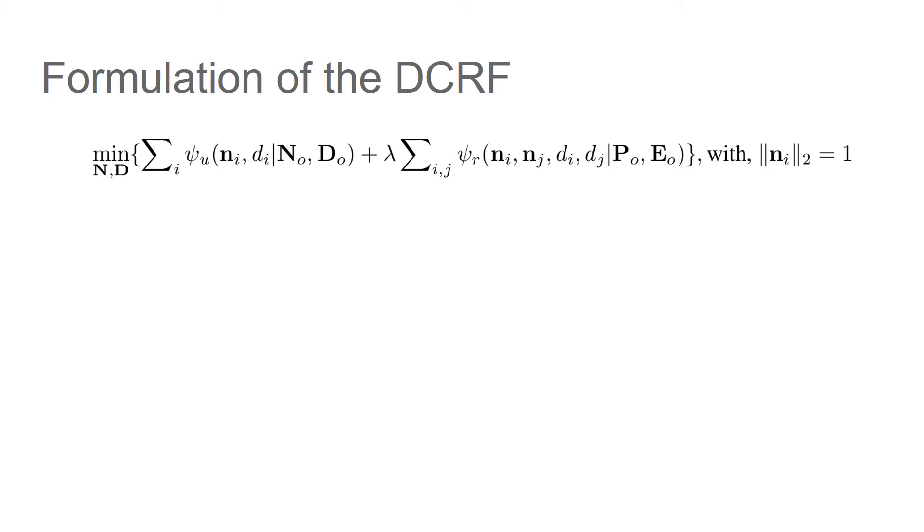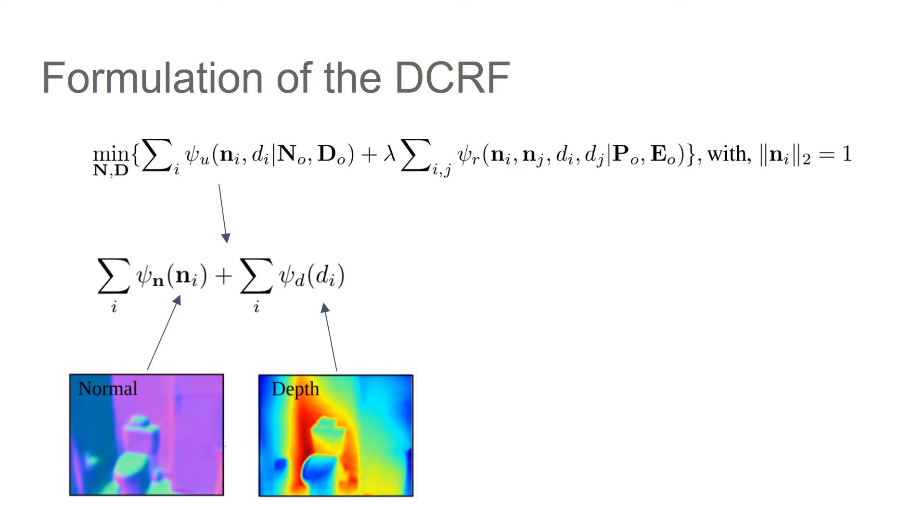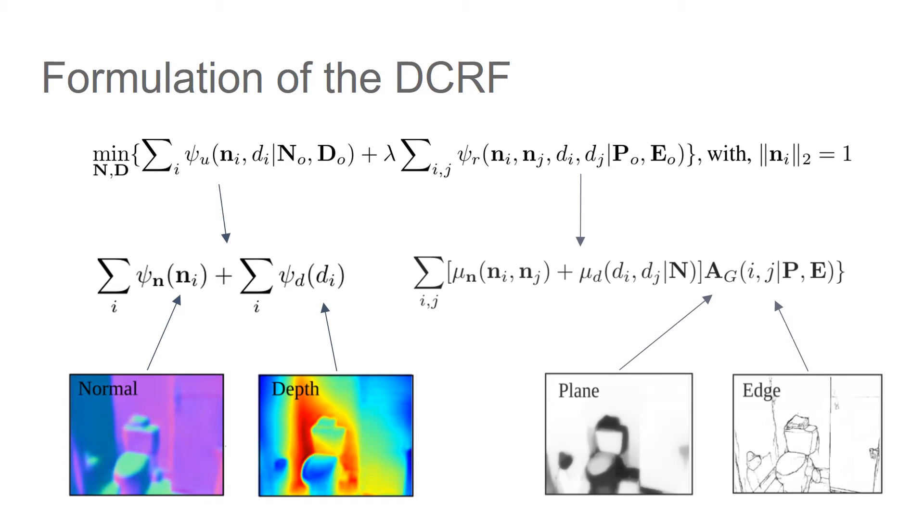The most critical part is the dense CRF layer, which could be formalized by a unary term and a pairwise term. The unary term penalizes the difference between the geometry prediction and original network output, and the pairwise term includes a compatibility term for both depth and normal and an affinity term respecting the predicted plane and edge information.